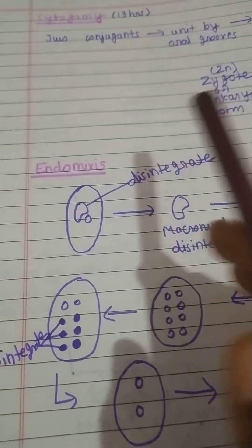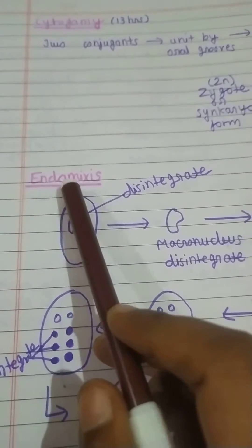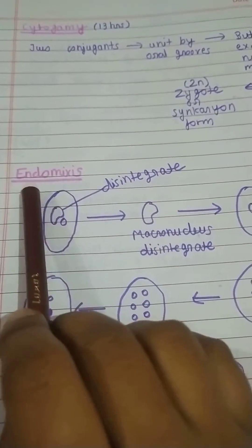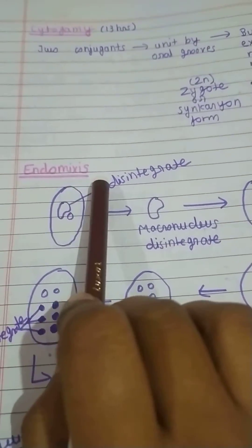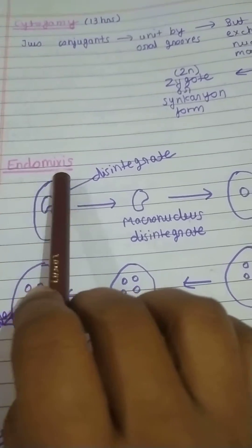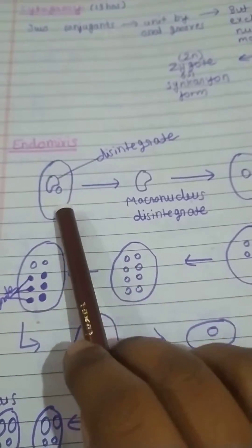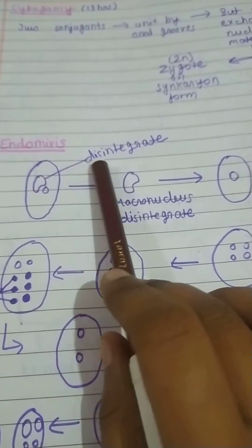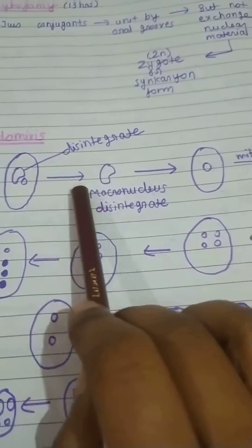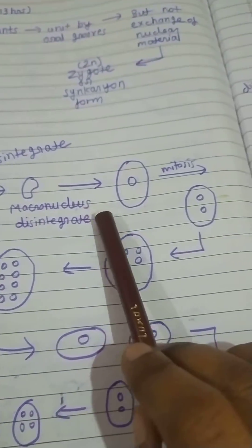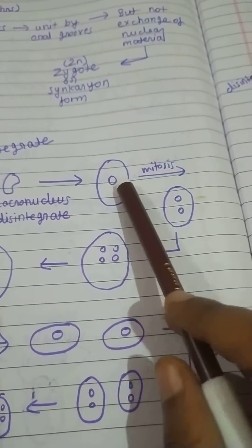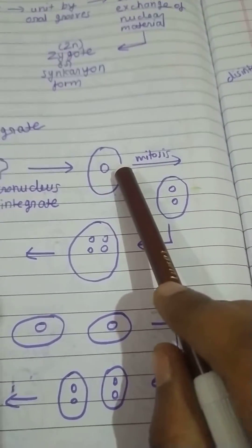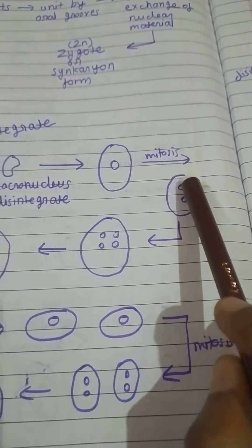There is one more third type of asexual reproduction which takes place in Paramecium: endomixis. In this process, there is a macronucleus and micronucleus. The macronucleus disintegrates, and the micronucleus divides meiotically.